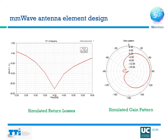In this figure you can see the simulated return losses of the millimeter wave antenna element. The return losses are well below -10 dB for the 13 to 15 GHz band and therefore the antenna operates in this band. The simulated gain pattern shown on the right has a gain of around 8 dBi at boresight with very low back lobe radiation.